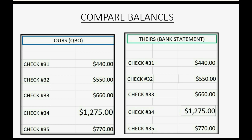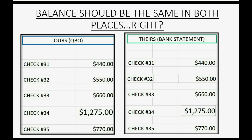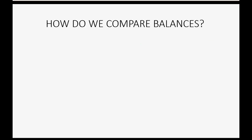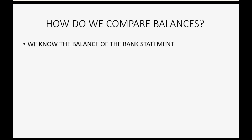So how do we make sure that we include everything in the bank reconciliation process? The way to do that is to compare the balances, because if all the same transactions are in both places then the balances should be the same. But how do we compare the balances to make sure we did not make a mistake when matching transactions between our QuickBooks Online records and our bank statement? Well, we know for sure what the balance of the statement is.